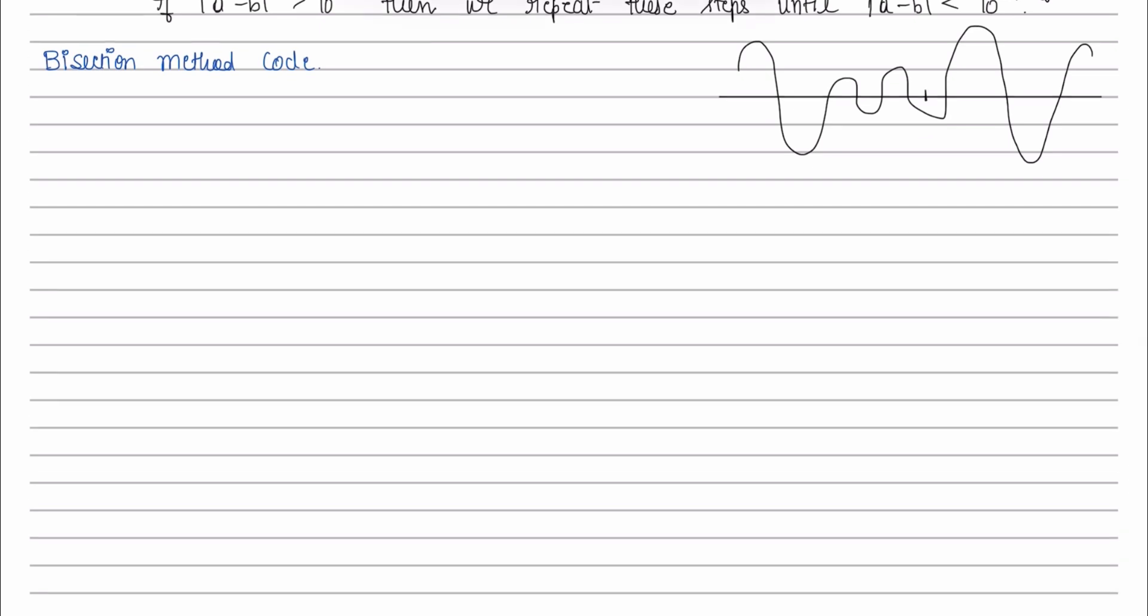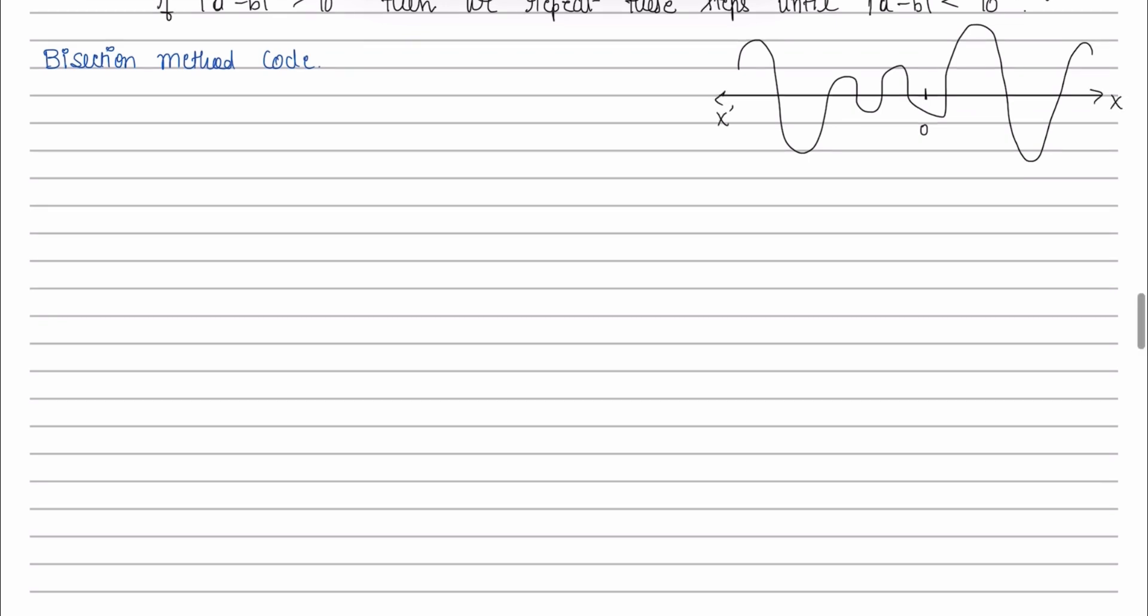Considering this as my x-axis and this is my 0, and this is my positive axis, this is my negative axis. In the positive axis, the function is having 3 roots and in the negative axis, my function is having 5 roots.